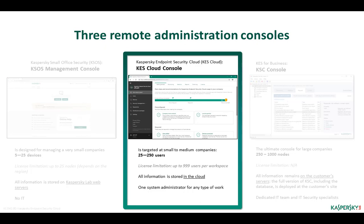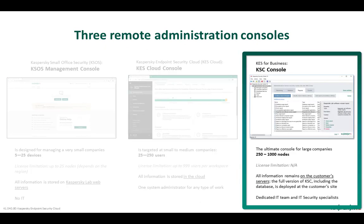A Kaspersky Endpoint Security Cloud license permits connecting up to 999 devices per workspace. The term 'workspace' refers to a virtual administration server designed to manage security applications on devices connected to Kaspersky Endpoint Security Cloud. The most complete licensing package for large networks is Kaspersky Endpoint Security for Business (KESB), which has a few levels — for example, Basic includes only bare necessities, similar to KESS Cloud but not exactly the same components.